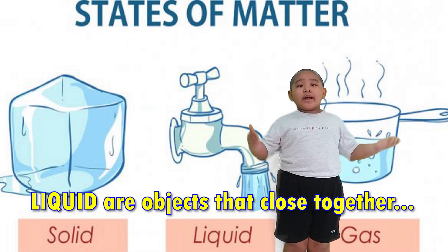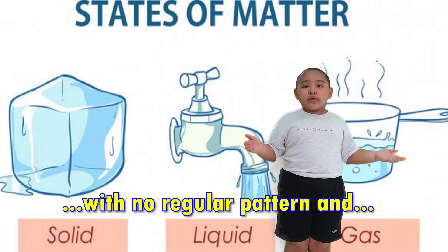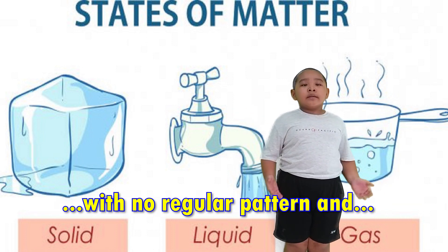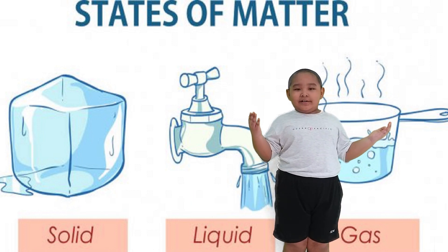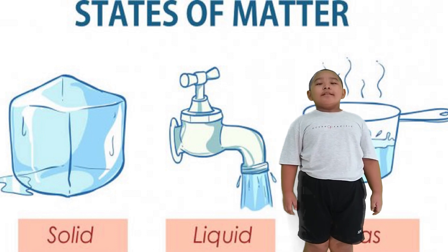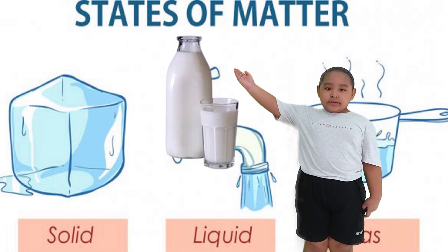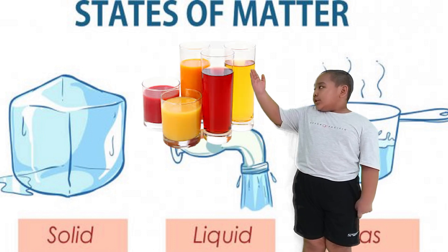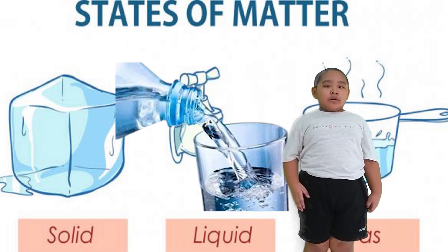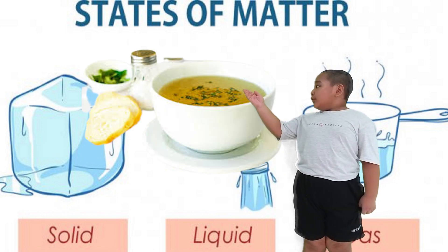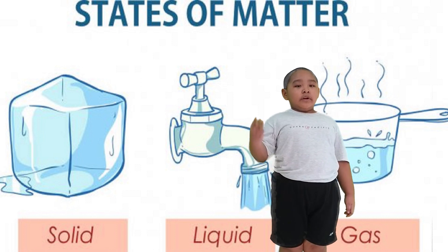Number two, liquids are objects that are close together with no regular pattern and take the shape of their container. Samples of liquid are milk, juice, water, soup, and paint.